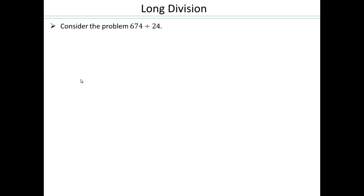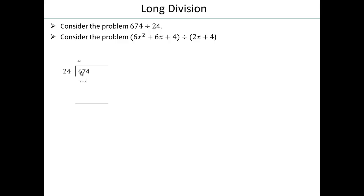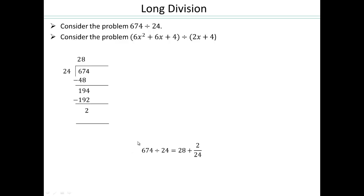Let's recall long division of numbers and use that to our advantage to do long division of polynomials. We have 24 times 2 is 48. Do the subtraction, we get 19. Bring the 4 down. Then 24 times 8 will give me 192, and that will give me a remainder of 2. So 674 divided by 24 is 28 whole plus 2 remainder.